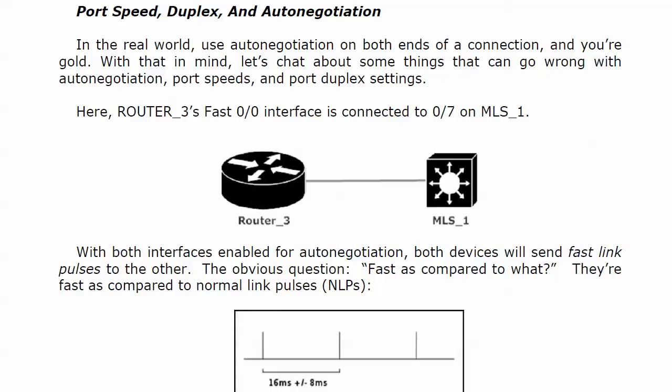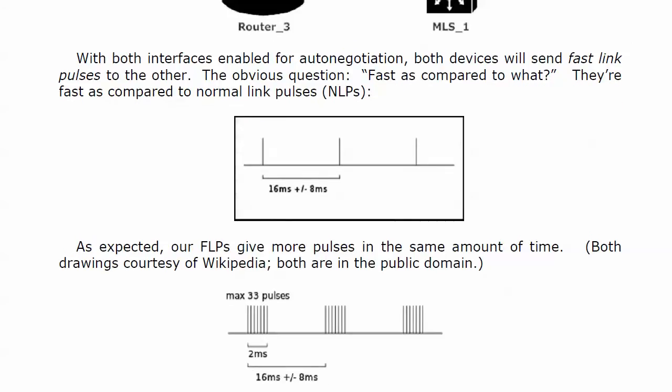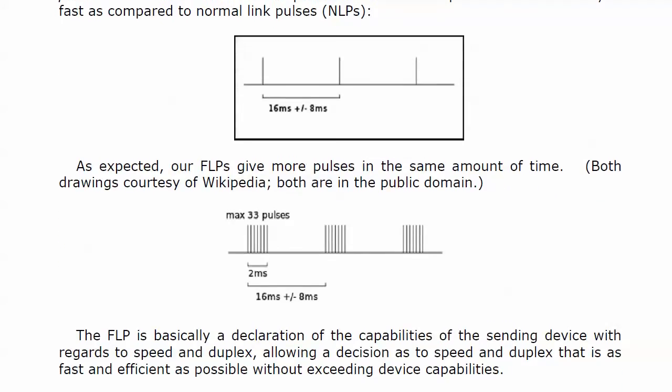With both interfaces enabled for auto-negotiation — one on router 3 Fast Ethernet 0/0, the other on multi-layer switch port 0/7 — they have a little conversation via fast link pulses. Fast link pulses are fastest compared to normal link pulses. In the same time frame of 16 milliseconds plus or minus 8 milliseconds, we're sending out a lot more pulses with FLPs than with NLPs.